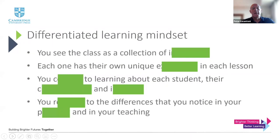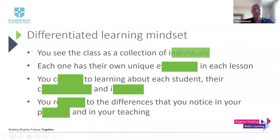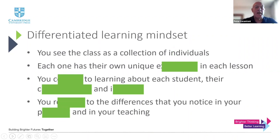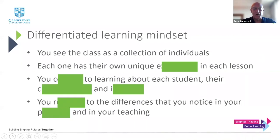This leads us to consider a differentiated learning mindset, or a philosophy. I'm going to give you five mindset ideas and I'd like you to tell me what the missing words are. First one: you see the class as a collection of individuals. Yes - the differentiated learning classroom sees people as a collection of individuals, not just as 'class three' or 'pre-IGCSE' or whatever it might be. We need to recognize that they are all different.